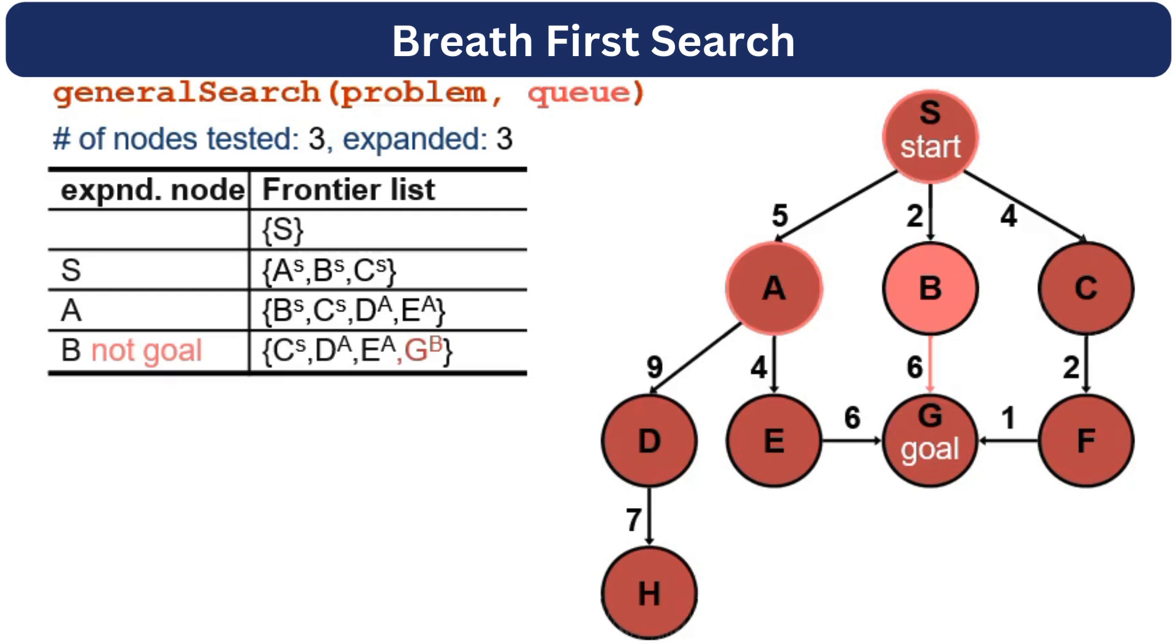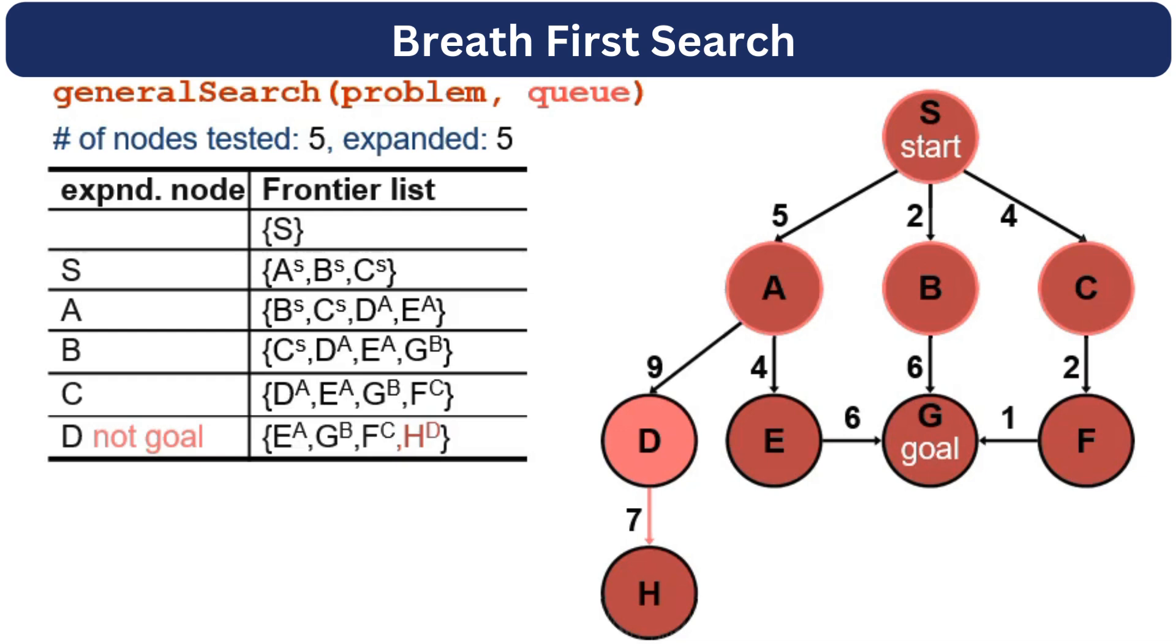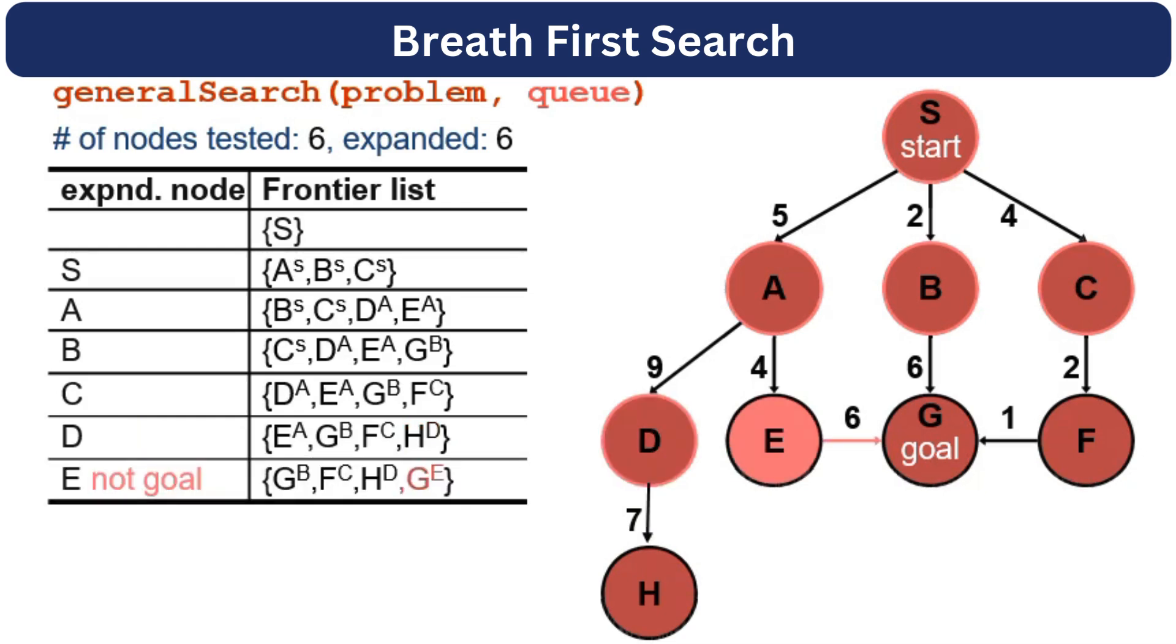We will proceed and expand the next node, which is C. After expanding C, we will get F and append F to the end of the queue. We will mark C as visited. C is not the goal. We will expand the next node, which is D, and we will get H. We will add H at the end of the queue. D is not the goal. We will expand the next node, which is E in our queue. After expanding E, we will get G node. We will append it at the end of the queue.